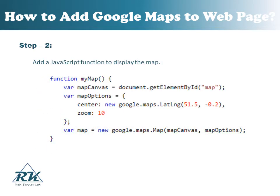The next step is to add a JavaScript function to display the map. Here, the map canvas variable is the map's HTML element. The map options variable defines the properties for the map. The center property specifies where to center the map using latitude and longitude coordinates. The zoom property specifies the zoom level for the map — try to experiment with the zoom level. The google.maps.Map object is created with map canvas and map options as parameters.